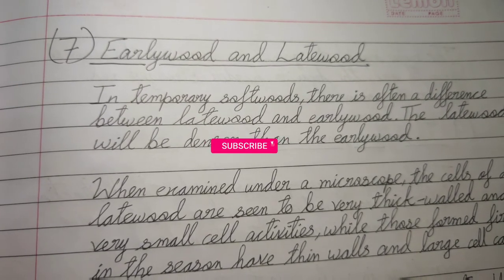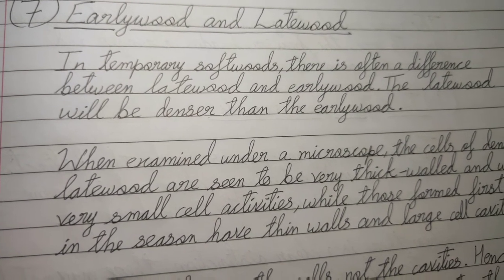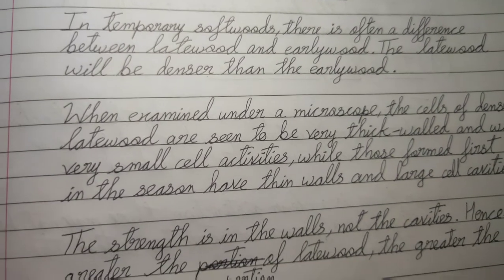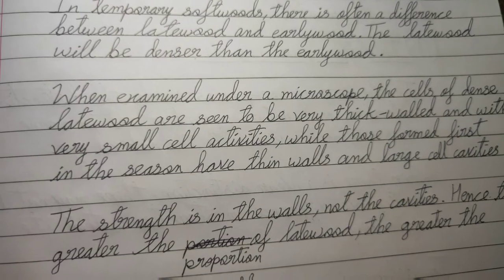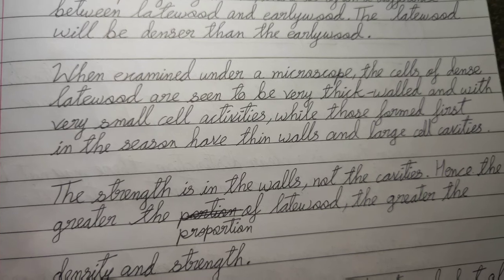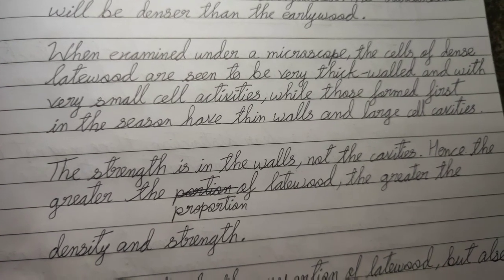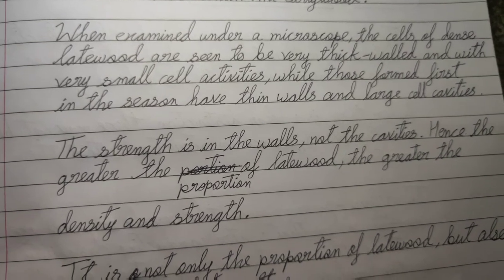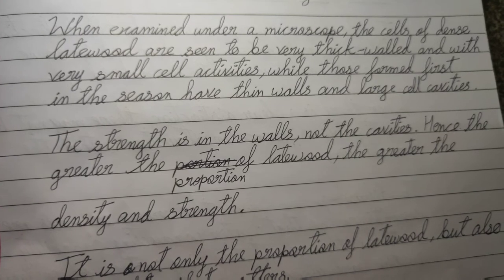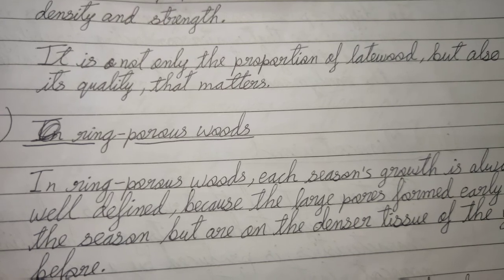In temperate softwoods there is often a difference between late wood and early wood. The late wood will be denser than early wood. When examined under the microscope, cells of dense late wood are seen to be very thick-walled with very small cell cavities, while those formed first in the season have thin walls and large cell cavities. The strength is in the walls, not the cavities; hence the greater the proportion of late wood, the greater the density and strength. It is not only the proportion of late wood but also its quality that matters.